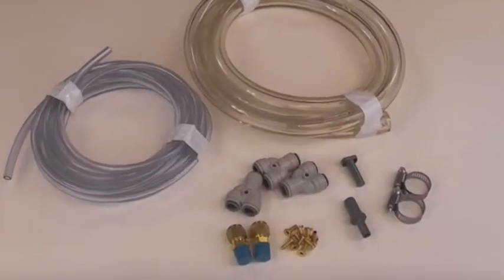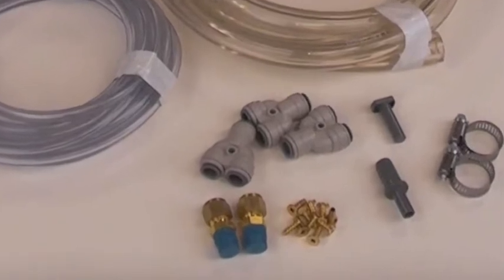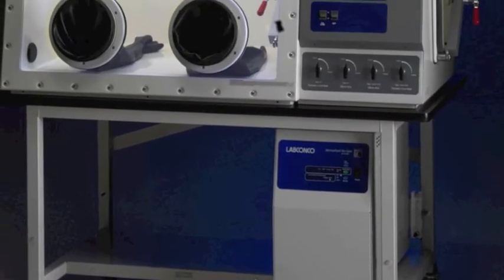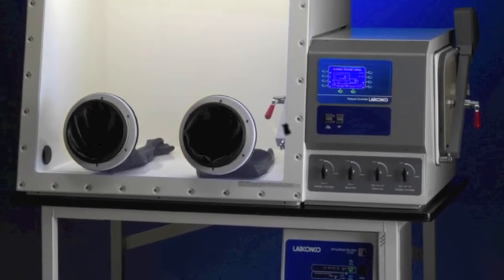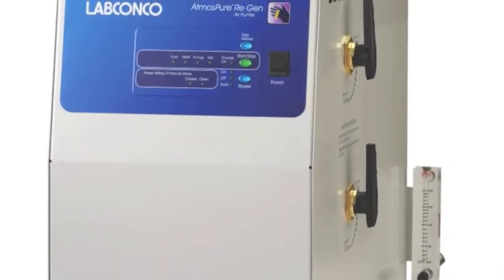Extra parts are provided in the gas, vacuum, and exhaust tubing kit to allow for alternative methods of tubing connection. This completes the entire plumbing and electrical assembly for the protector controlled atmosphere glove box and the AtmosPure Regen gas purifier.